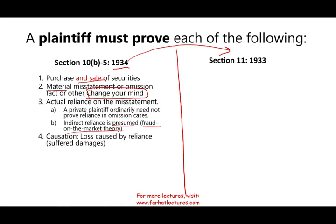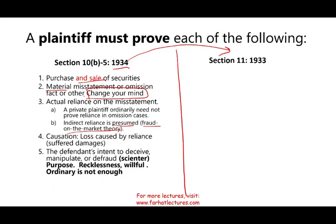Causation — you have to show that the loss was caused by the reliance, that you suffered damages because of the material misstatement or omission. But the hardest element is that the defendant had intent to deceive, manipulate, or defraud. You have to prove what's called scienter or fraud — that they did this on purpose, with recklessness or willful disregard of the truth. Ordinary negligence is not enough. This is what makes Rule 10B-5 difficult to prove.